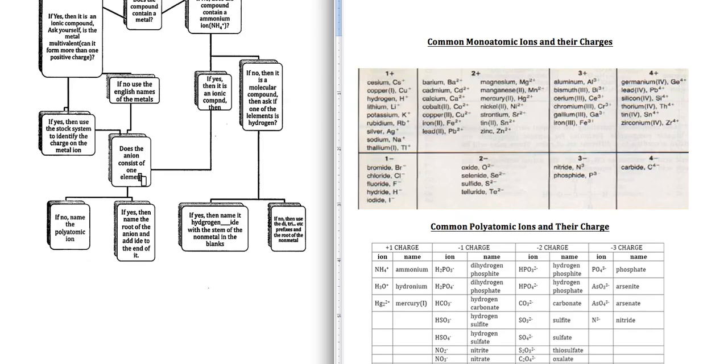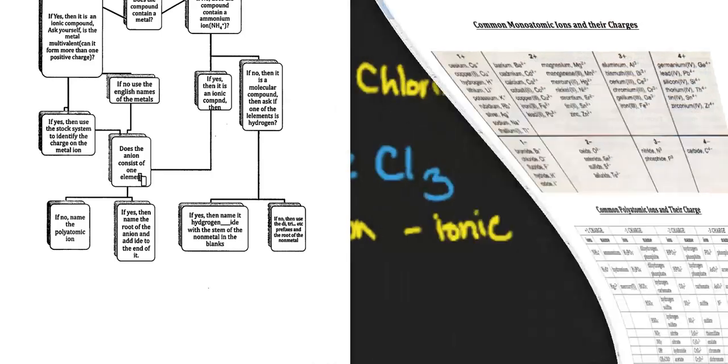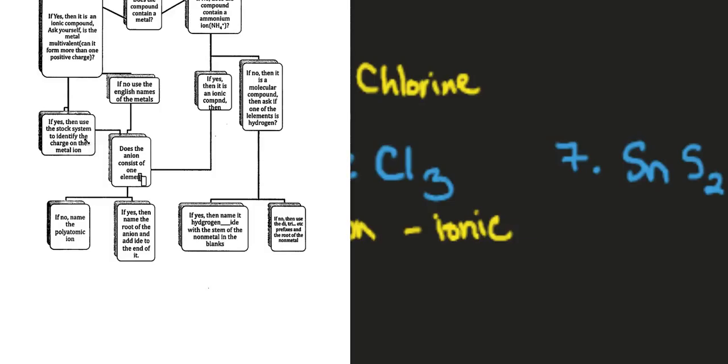Because it's multivalent, multivalent means that it can form more than one charge. Because it's multivalent we have to use the stock system and we have to identify the charge of this iron.